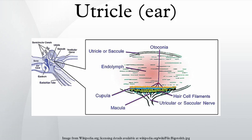The utricle is larger than the saccule and is of an oblong form, compressed transversely, and occupies the upper and back part of the vestibule, lying in contact with the recessus ellipticus and the part below it. The macula utriculi is a thickening in the wall of the utricle where the epithelium contains vestibular hair cells that allows a person to perceive changes in longitudinal acceleration as well as effects of gravity. The gelatinous layer and the statoconia together are referred to as the otolithic membrane, where the tips of the stereocilia and kinocilia are embedded.